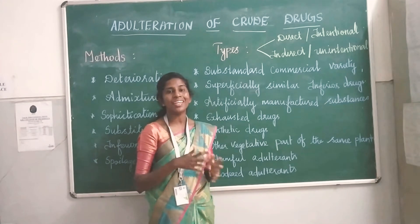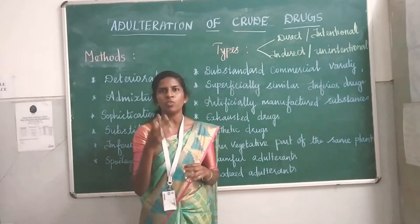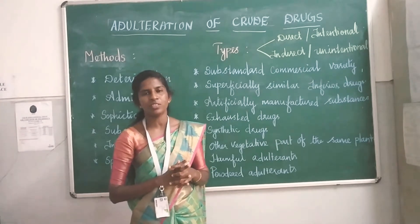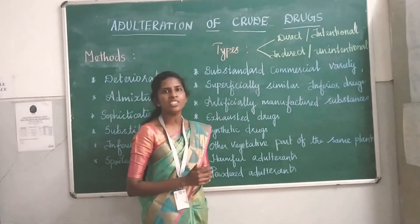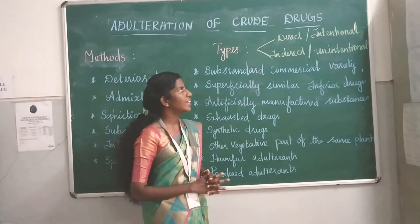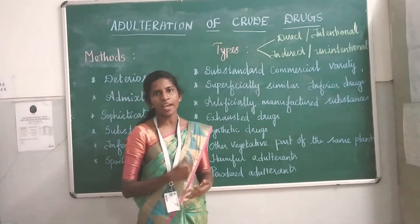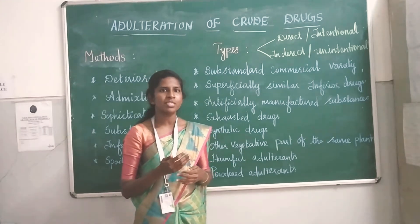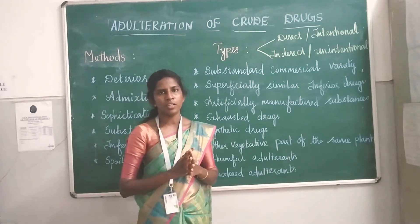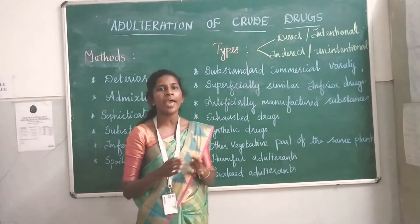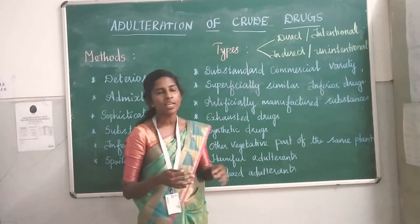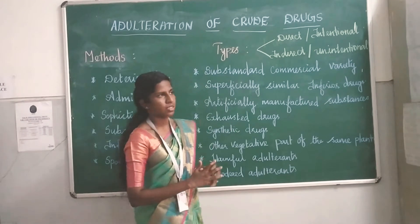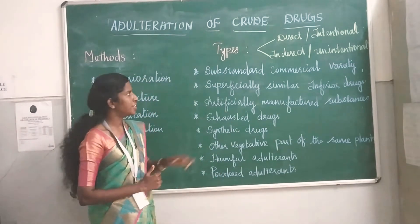Intentional adulteration is when people knowingly add the original drug with some other impure drug — that is a direct or intentional type of adulteration. Indirect or unintentional adulteration happens because of lack of knowledge about the authentic drug or confusion in the vernacular names of the plant, causing people to accidentally mix the original drug with some other impure drug.